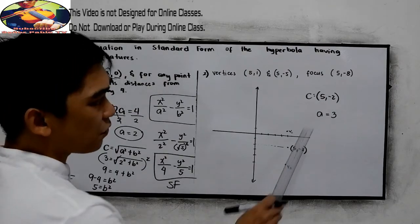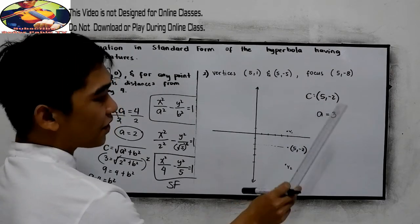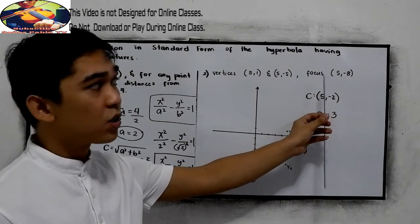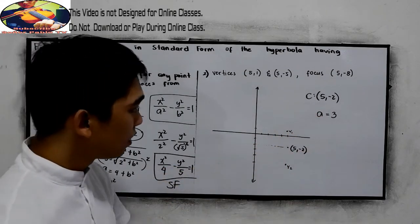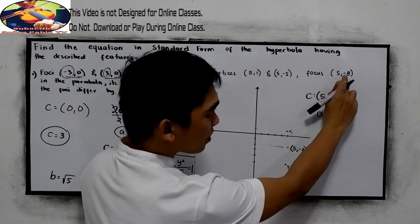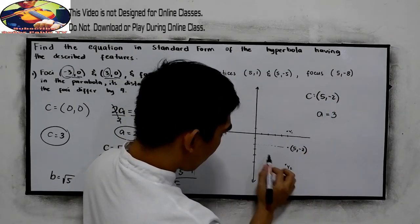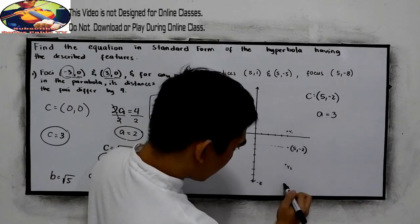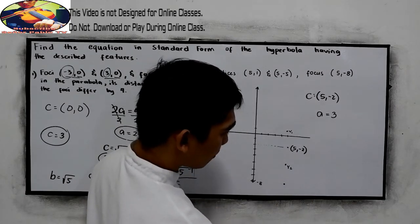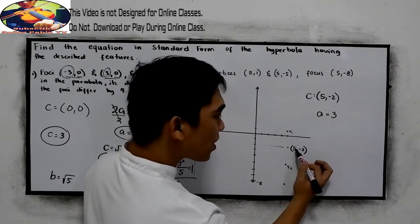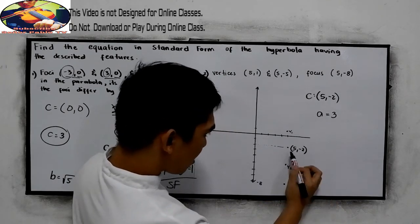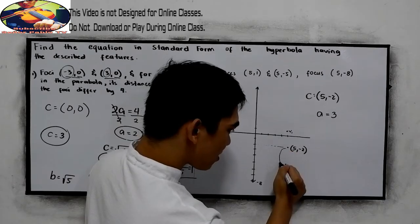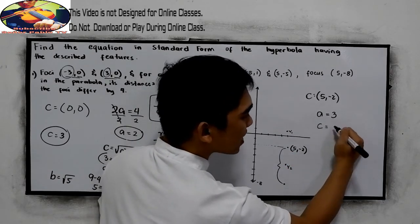Now we have the values for the center and a. We also have the given focus. From the focus at (5, -8), we can get the value of c. Counting from our center at (5, -2) down to (5, -8), that is 6 units. So c equals 6.